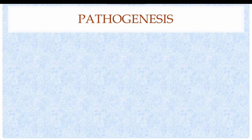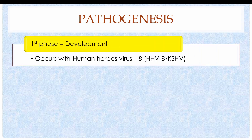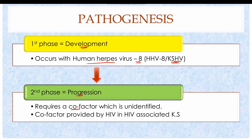The pathogenesis of Kaposi Sarcoma consists of two phases. The first phase is development of the tumor: the basic factor that transforms normal cells into neoplastic cells is infection with Human Herpes Virus 8, also known as Kaposi Sarcoma Herpes Virus. Once the cancer has developed, progression of the tumor is driven by a cofactor. In HIV-associated Kaposi Sarcoma, the cofactor is HIV, but in the other three subtypes the cofactor for progression is unidentified.